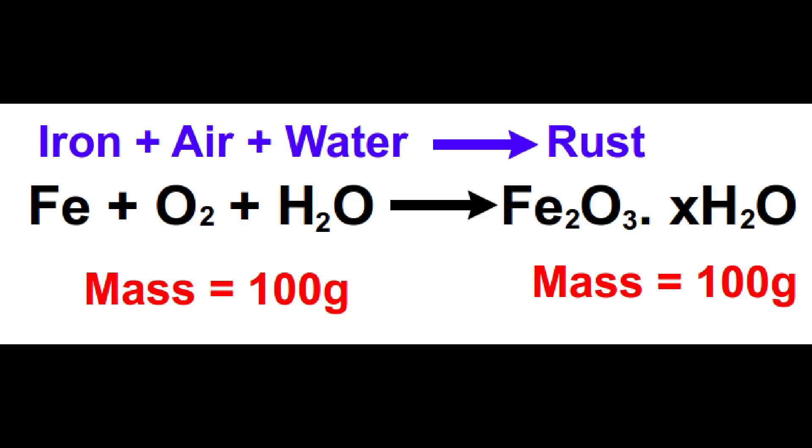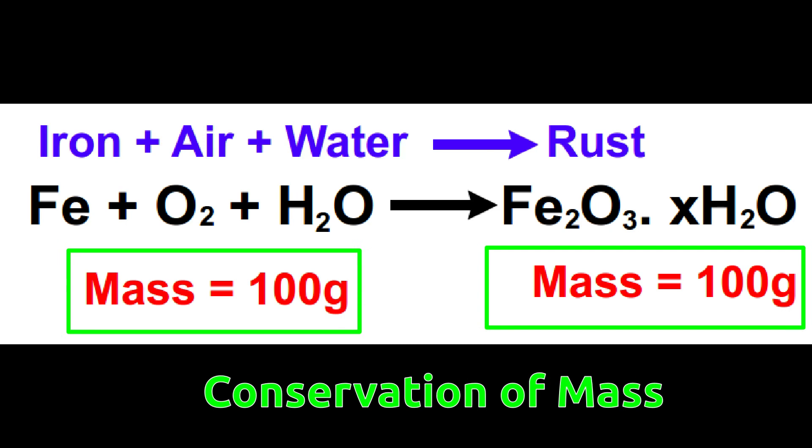Dalton's model was able to correlate with laws of chemical combinations. Dalton's theory and laws of chemical combination both stated that matter cannot be created as well as it cannot be destroyed. This is also known as law of mass conservation.